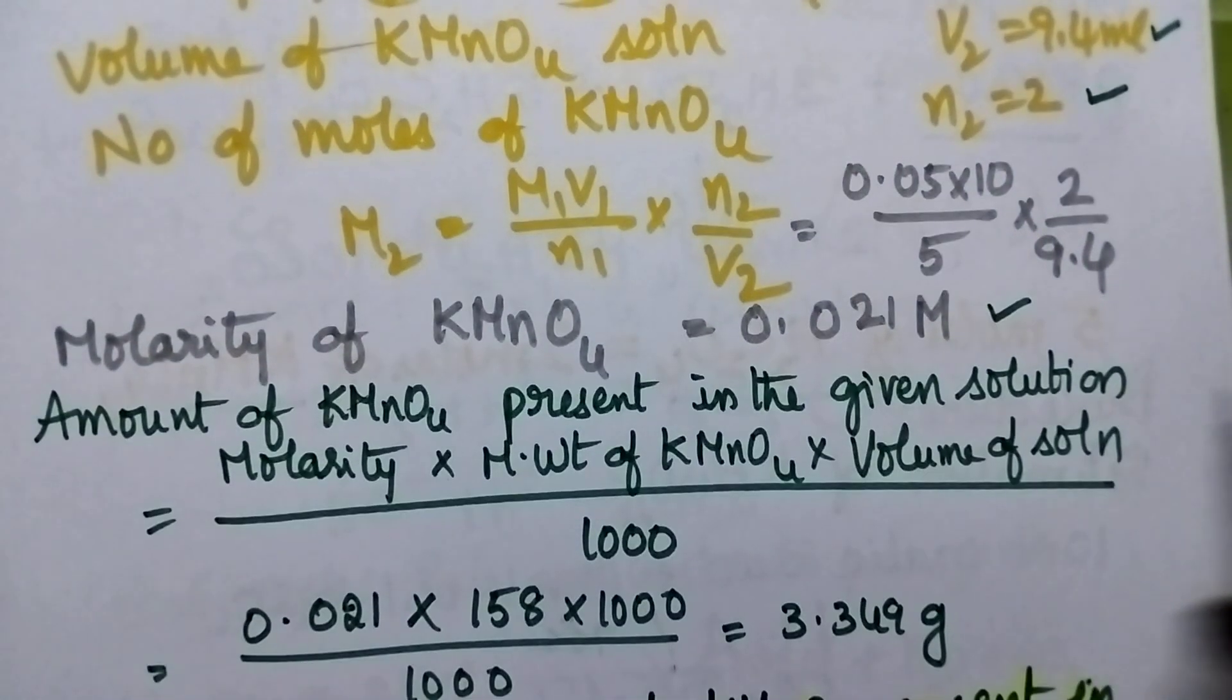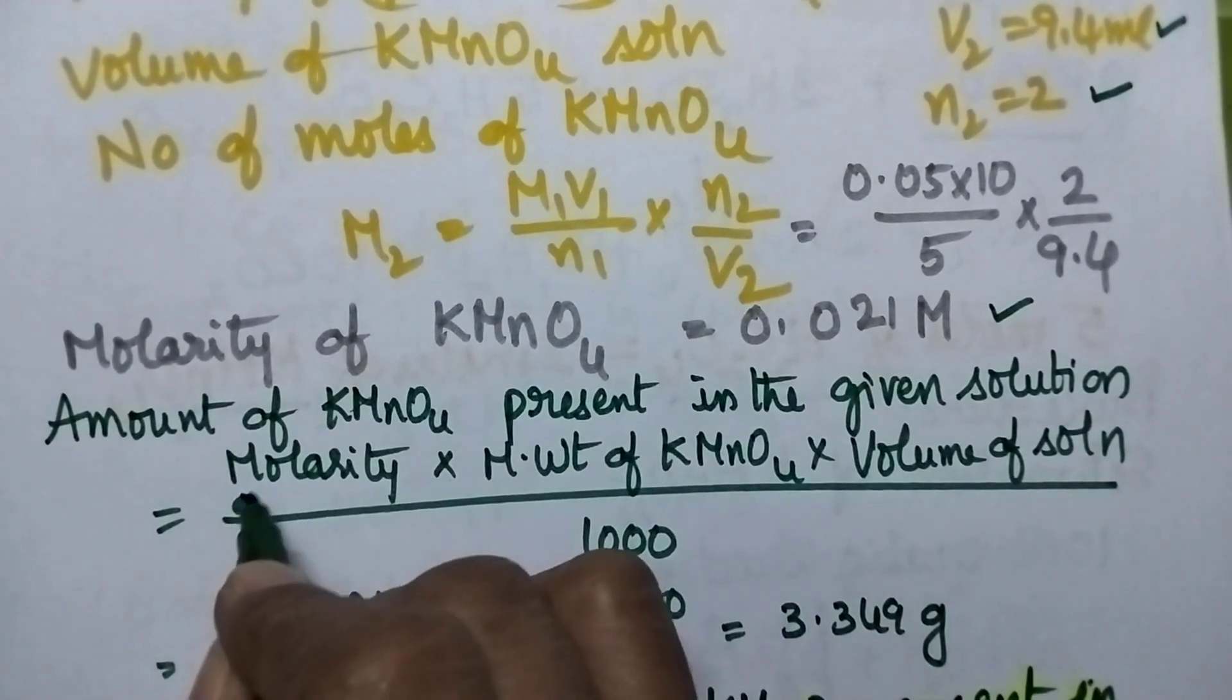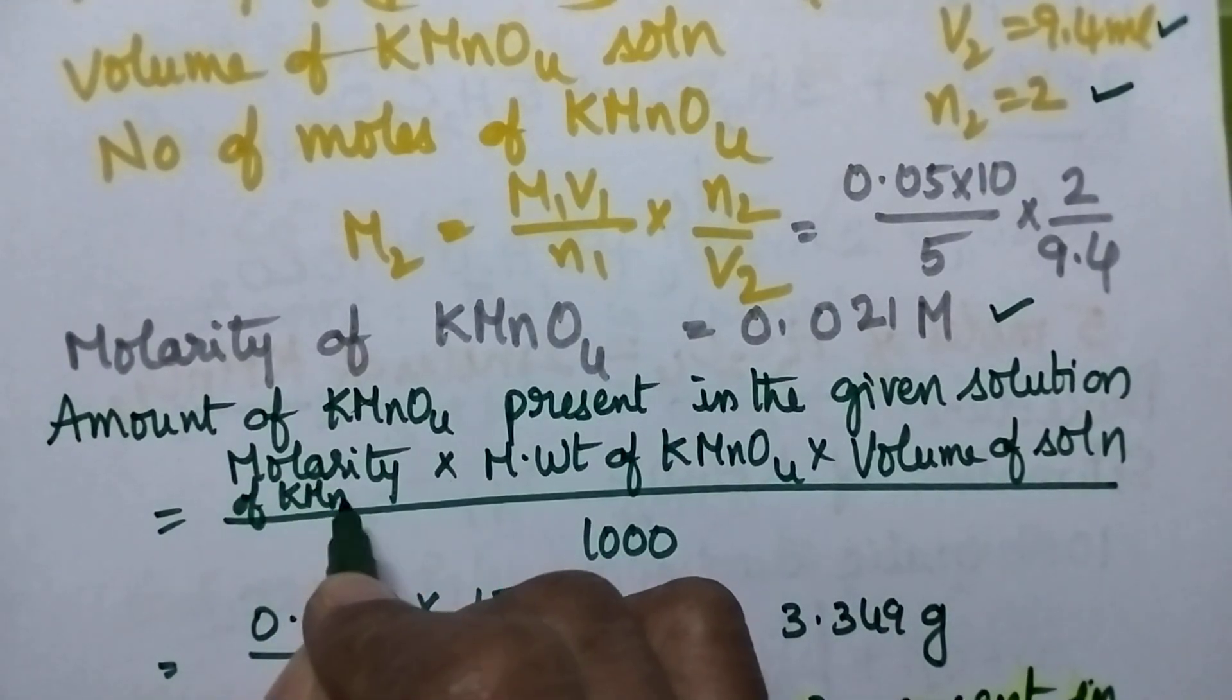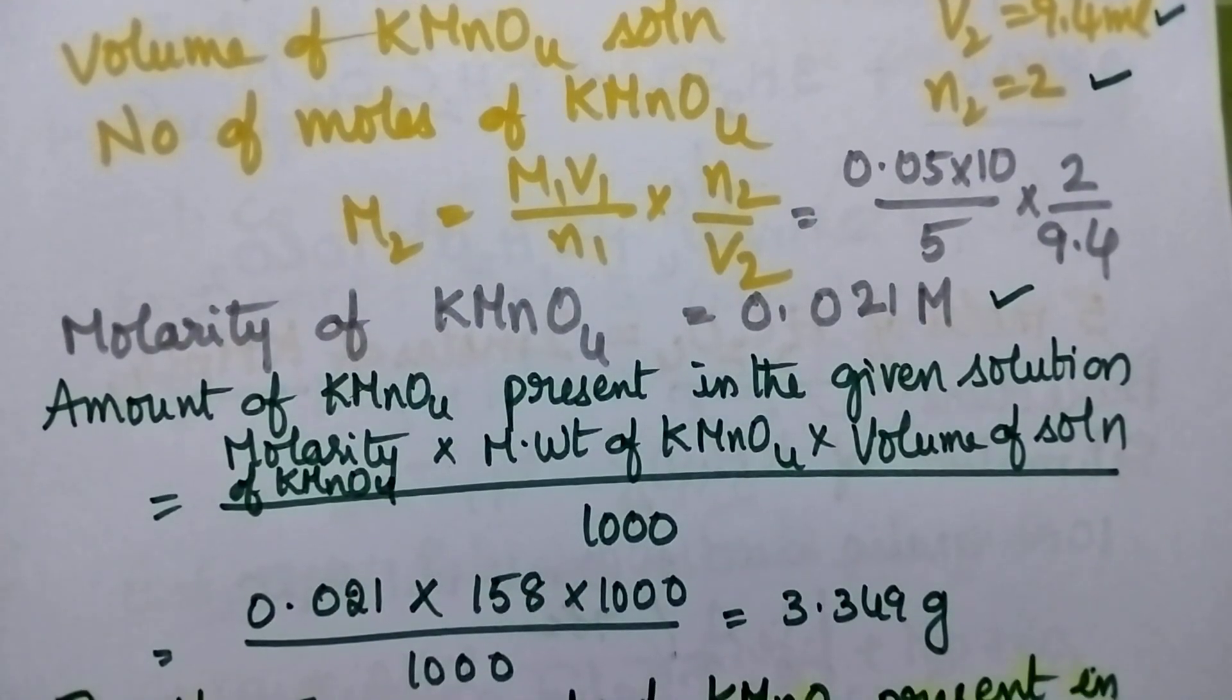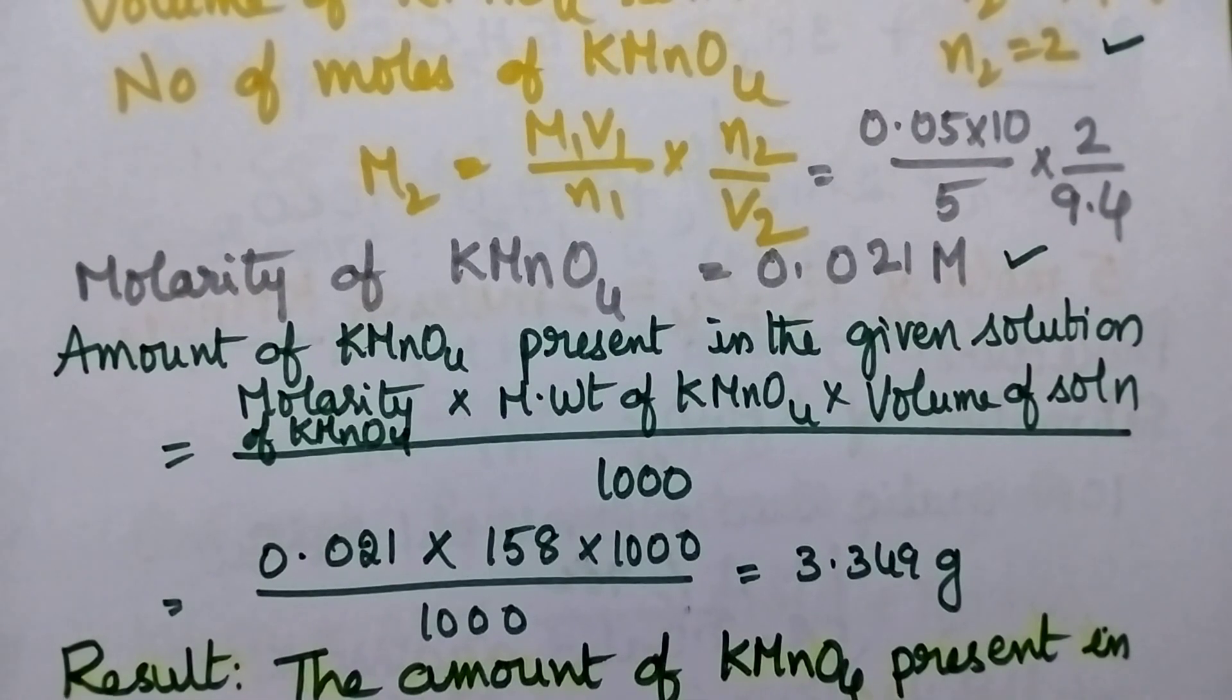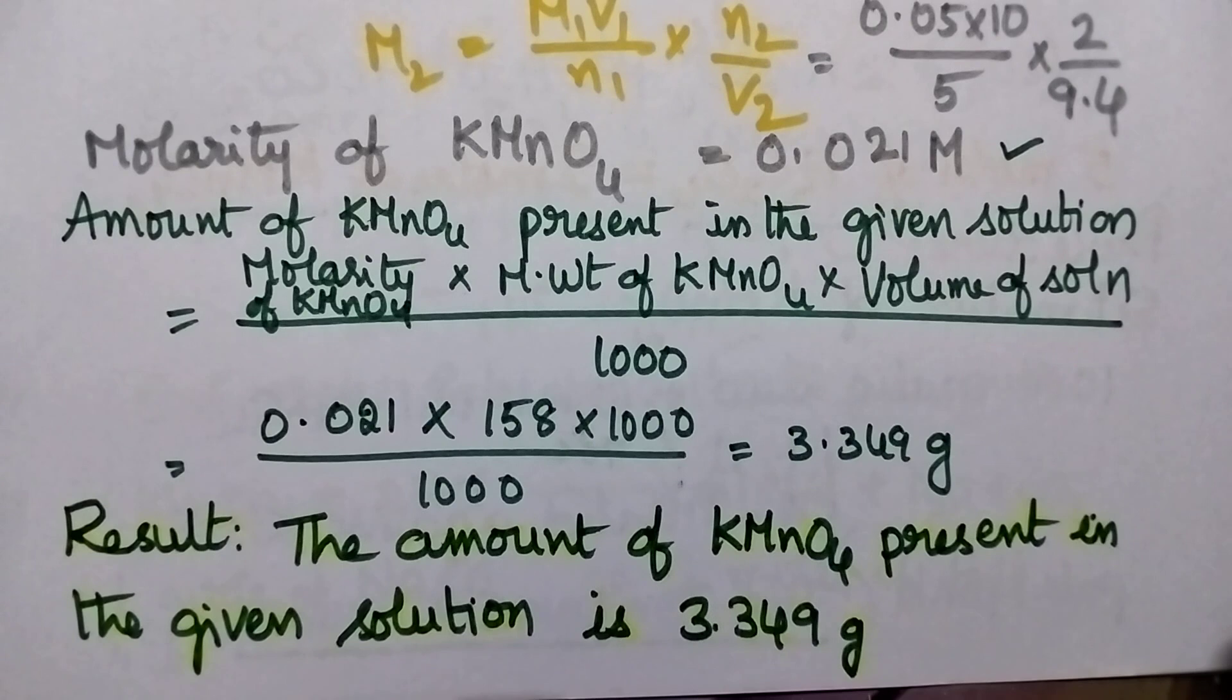On calculating the molarity, we can calculate the amount using the formula: Molarity of KMnO4 × Molecular weight of KMnO4 × Volume of solution / 1000. That equals 0.021 × 158 × 1000 / 1000 = 3.349 grams.